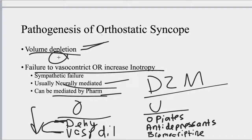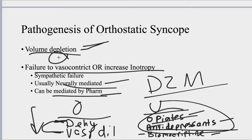The non-obvious or overlooked pharmacological causes include opiates, antidepressants, and bromocriptine. Antidepressants are the most commonly overlooked risk factor for orthostatic syncope. The two most clinically important non-obvious agents to remember are opiates and antidepressants. Antidepressants are again the most overlooked risk factor, so always look for antidepressants when working up orthostatic syncope.